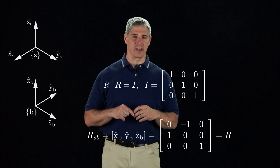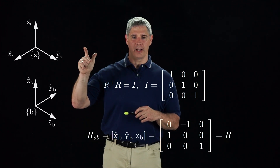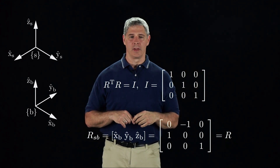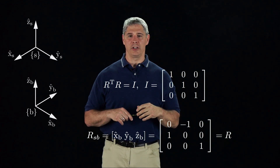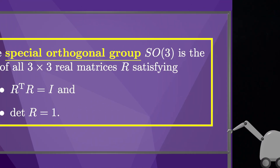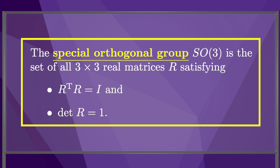These constraints ensure that the determinant of R is either 1, corresponding to right-handed frames, or minus 1, corresponding to left-handed frames. We only use right-handed frames, so the determinant of R must be 1. The set of all rotation matrices is called the special orthogonal group SO(3): the set of all 3×3 real matrices R such that R transpose R equals the identity matrix and the determinant of R equals 1.